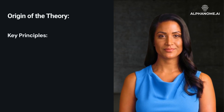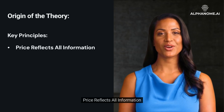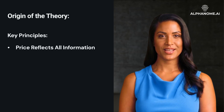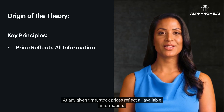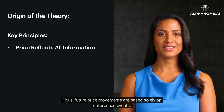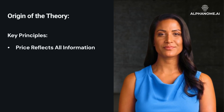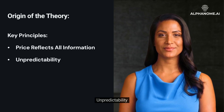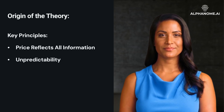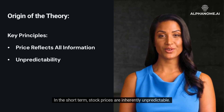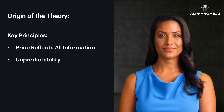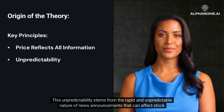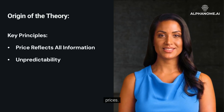Key Principles. First, price reflects all information: at any given time, stock prices reflect all available information, and thus future price movements are based solely on unforeseen events. Second, unpredictability: in the short term, stock prices are inherently unpredictable. This unpredictability stems from the rapid and unpredictable nature of news announcements that can affect stock prices.